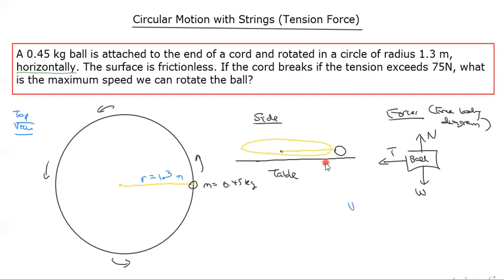The ball is going around in this direction in a circle, so we can undertake analysis vertically as well as horizontally. Vertically, if we take up to be positive and down to be negative, we have normal minus weight equals ma vertical. The ball's not going up or down, so it's zero. Your normal equals your weight - nothing really needed for this question.